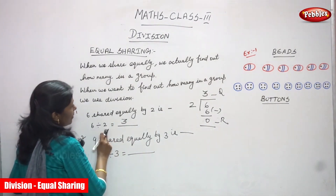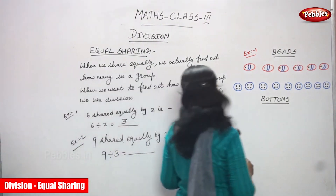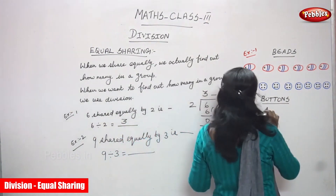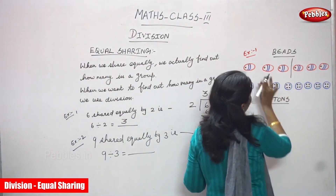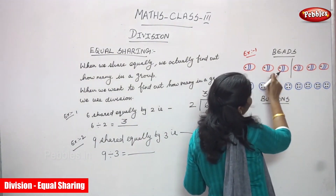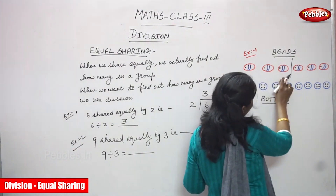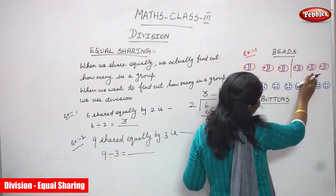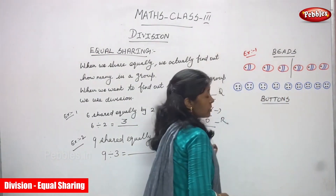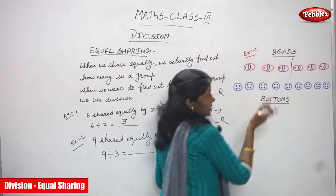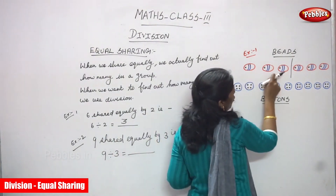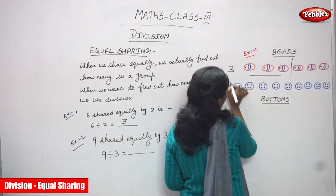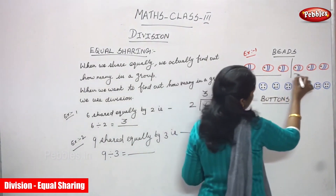6 divided by 2 equals 3. That means there are 2 groups and in each group there are 3 beats. There are 6 beats altogether. I segregate them into 2 groups — in each group I have 3 beats. So how many groups? 2 groups. But in each group, how many? That is what equal sharing. 6 shared equally by 2, you get 3. That is the answer: 3.